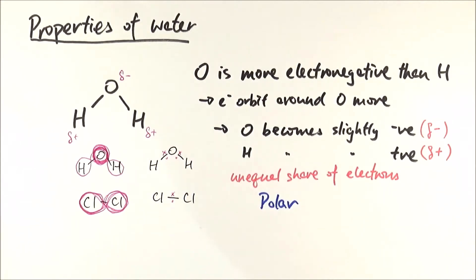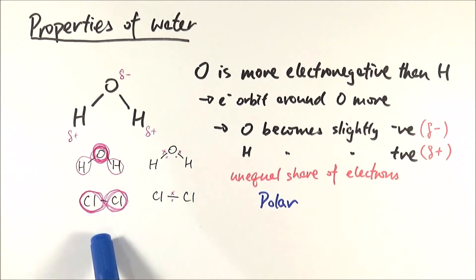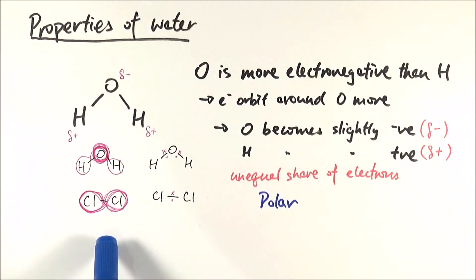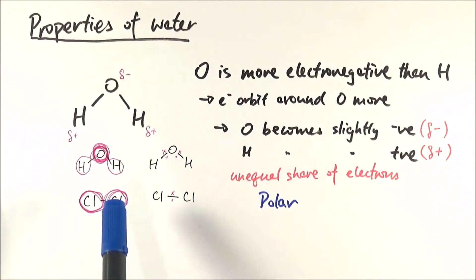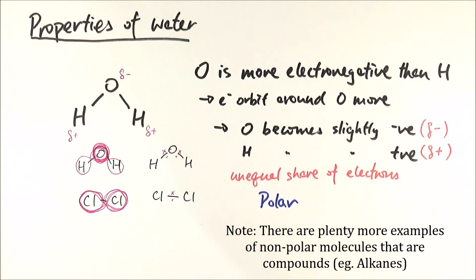Other polar molecule examples apart from water include glucose and hydrochloric acid (HCl), where the electrons go towards the Cl nucleus rather than hydrogen. Non-polar molecule examples include chlorine (Cl₂), hydrogen (H₂), and oxygen (O₂) — basically any molecule that is a diatomic element.